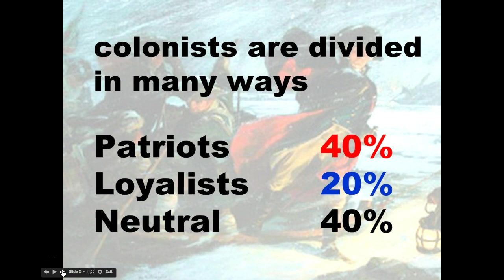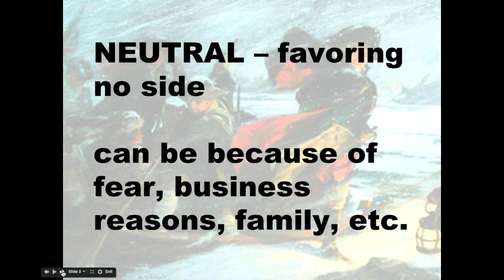We did have a large number of people that were loyalists and neutral. No matter how you slice these numbers up, most historians believe that probably less than 50% of the colonists at some point during the war were actually not in favor of independence, whether that meant they were neutral or they were loyalists. Not everybody is completely on board, and we just have to keep that in mind as we talk about what the colonists are doing in this particular war.